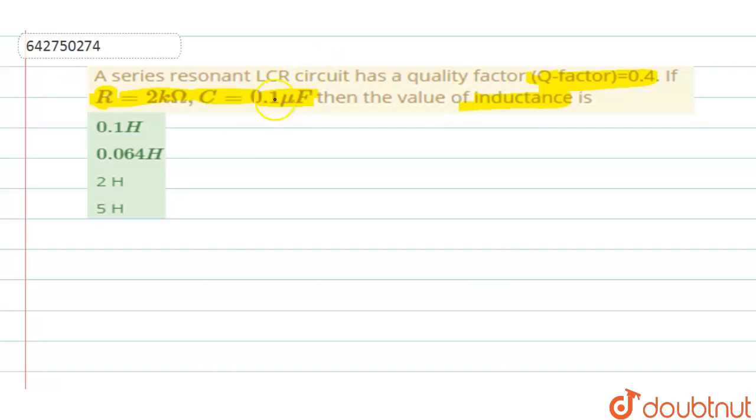So in this question, they have already given you the Q factor. Q factor is given to be 0.4. R, the resistance is given to be 2 kilo ohms. Capacitance is given to be 0.1 micro farad. And you are supposed to find the inductance L.